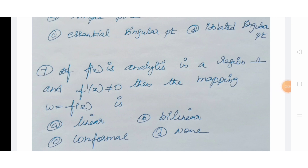Next question: If f(z) is analytic in a region Ω and f'(z) ≠ 0, then the mapping w = f(z) is — Option A: linear, Option B: bilinear, Option C: conformal, Option D: none of these.